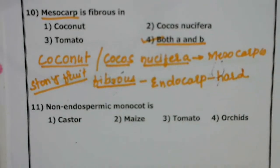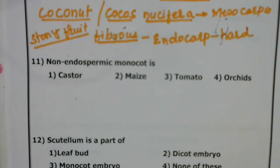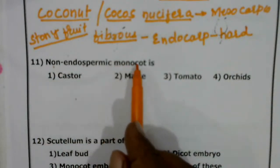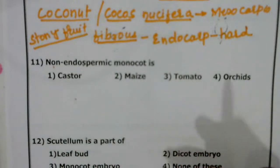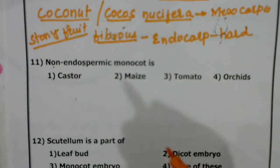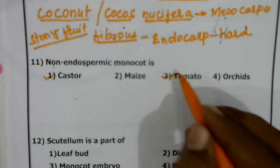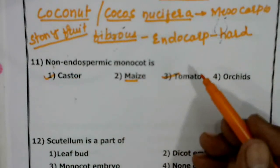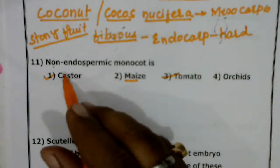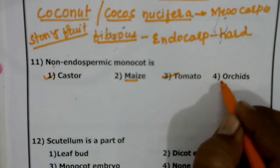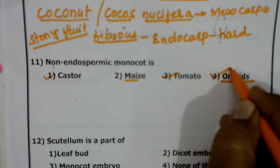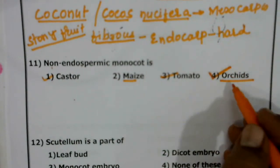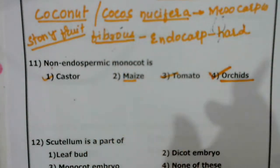The 11th question: which is the non-endospermic monocot? Among castor, tomato, maize, and orchids — castor is a dicot, tomato is a dicot, maize is a monocot, and orchids are monocots. In castor and maize the endosperm is present, whereas in orchids the endosperm is absent. So orchids are called non-endospermic monocots.